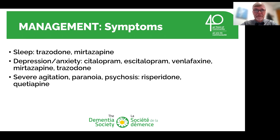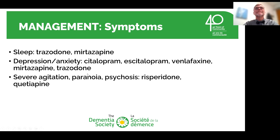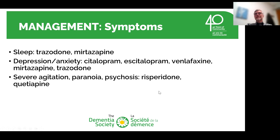In all cases of dementia including Alzheimer's type, sleep cycle disruption needs to be treated — trazodone and mirtazapine are good medications for this. There is a risk of depression and anxiety; medications safe to use in people with cognitive impairment include citalopram, escitalopram, venlafaxine, mirtazapine, and trazodone. For severe agitation, paranoia, and psychosis, antipsychotics like risperidone and quetiapine can be used. Managing symptoms is an important component of care for people with dementia.